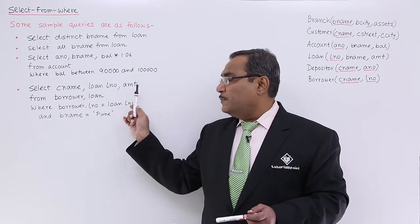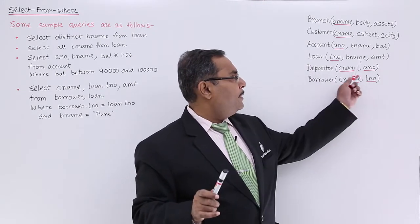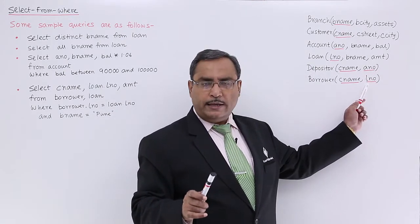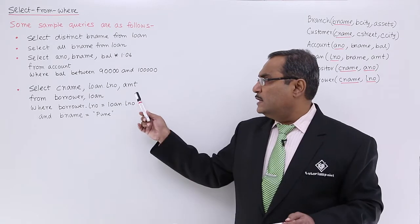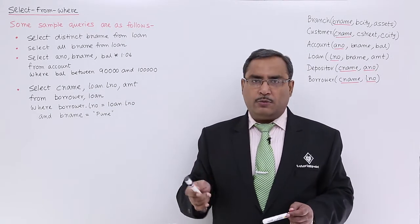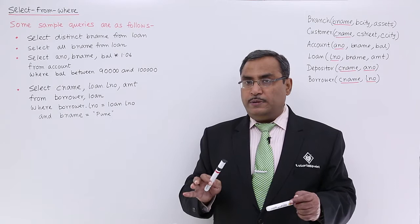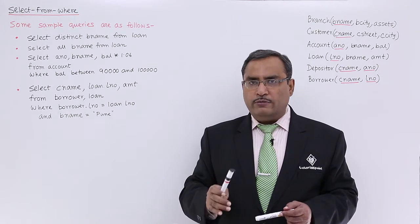In case of amount, loan has amount but borrower does not have any amount field. Instead of writing amount, I can also write loan dot amount. There is no ambiguity because that attribute is coming from one relation only.